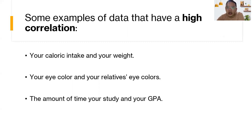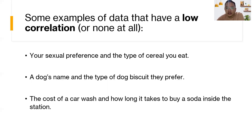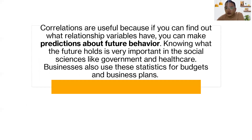Some examples of data that have a high correlation: your calorie intake and your weight, your eye color and your relative's eye color, and the amount of time you study and your GPA. Examples of data that have a low correlation or none at all: your sexual preference and the type of cereal you eat, a dog's name and the type of dog biscuit they prefer, and the cost of a car wash and how long it takes to buy a soda inside the station.